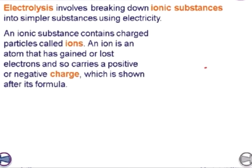An ionic substance contains charged particles called ions. An ion is an atom that has gained or lost electrons and so carries a positive or negative charge, which is shown after its formula. Cations are positive ions, formed by metals when they lose electrons. Anions are negative ions, formed by non-metals when they gain electrons.